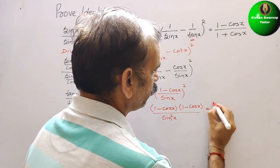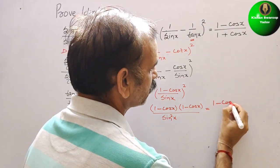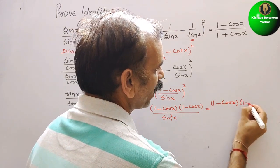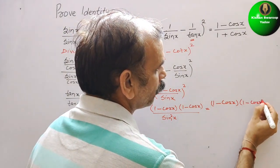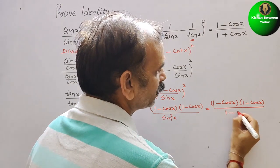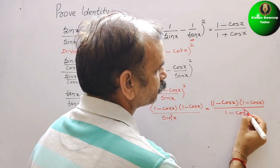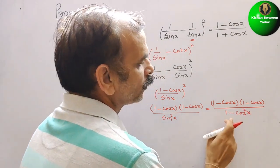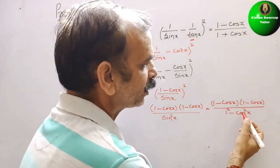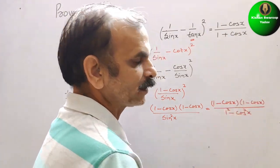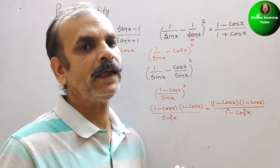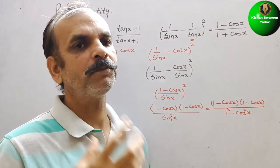So this becomes (1 - cos x)(1 - cos x) divided by (1 - cos²x). Now we can write 1 - cos²x as 1² - cos²x, which is in the form of a² - b².